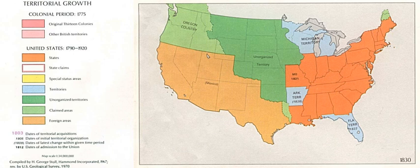In modern usage it indicates an area in which local government does not exist, or exists only in embryonic form. However, the area is still, at least in theory, governed by the nation of which it forms part, or by a smaller unit of that nation.